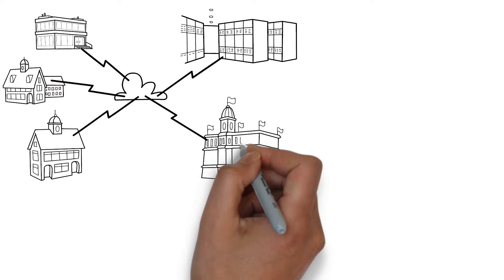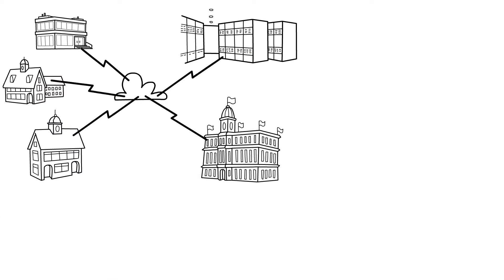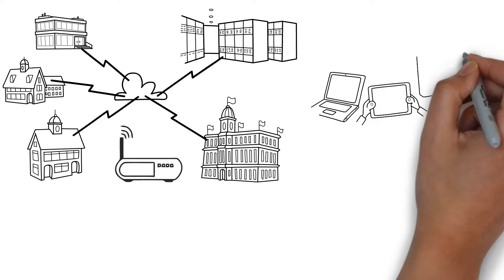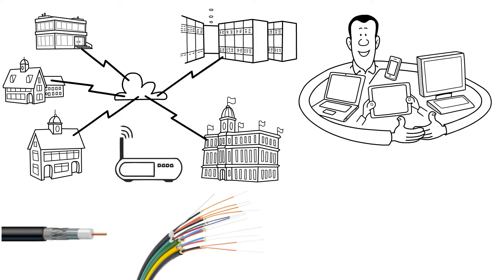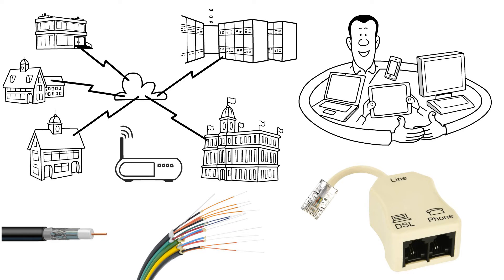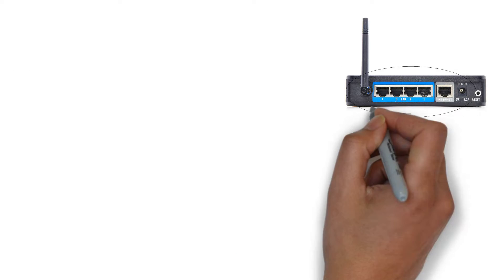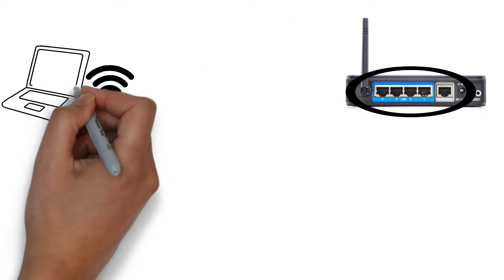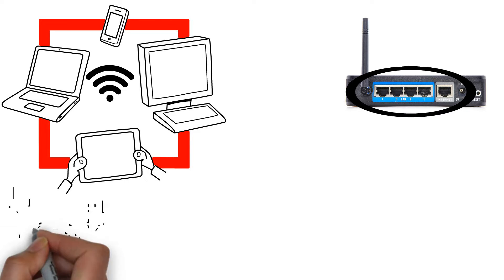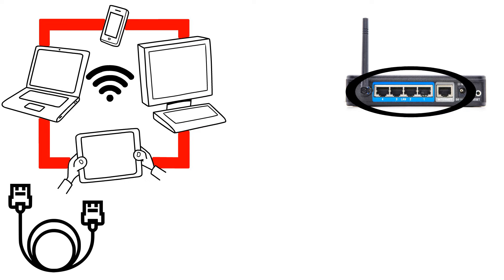To connect the internet to your home you need a modem. It's a small device usually installed by your provider that connects your home to the internet. The connection is via cable — coaxial or fiber optic — or telephone line DSL. The connector is usually located on the back of the modem, and internet is supplied to a computer or router via an ethernet cable.